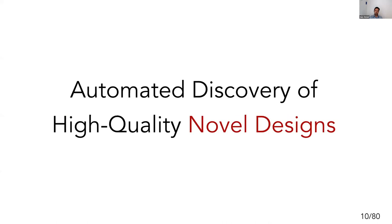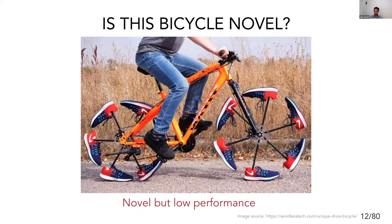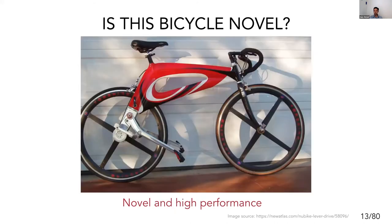Talking about novel design — it's a good idea to clarify the definition of novelty. If I show you a common bicycle and ask if it's novel, it is possibly not novel, though it may be high performance. In contrast, if you look at another bicycle with shoes attached to the spokes, you can imagine that this could be considered a novel design, but it is low performance — it probably wouldn't be used in a bike racing competition if the performance metric is speed. Ideally, what we want is something which is both novel and has high performance. This is the topic we will discuss today.